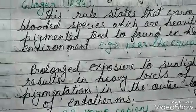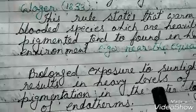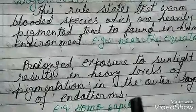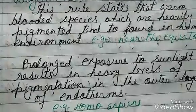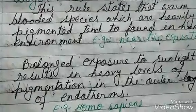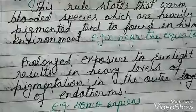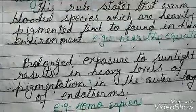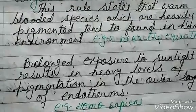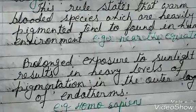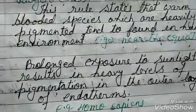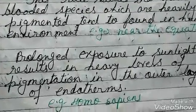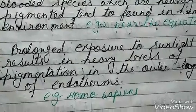Prolonged exposure to sunlight results in heavy levels of pigmentation in the outer layer of endotherms, while less exposure to sunlight results in less pigmentation in the skin. An example is Homo sapiens.